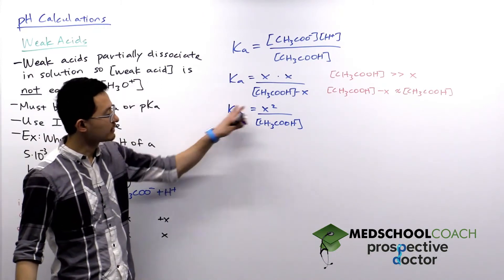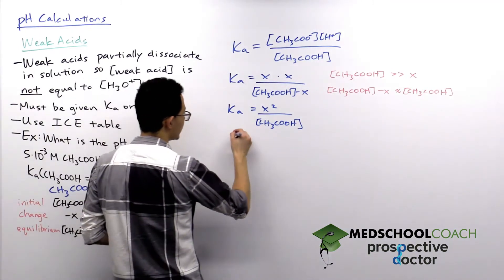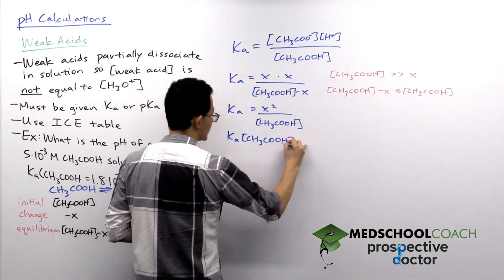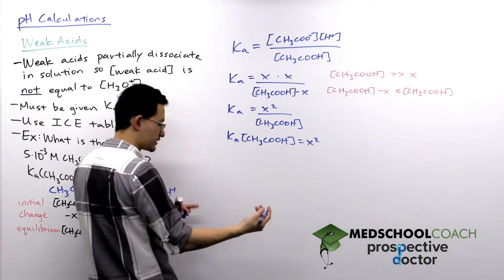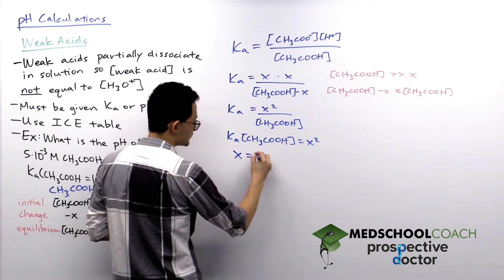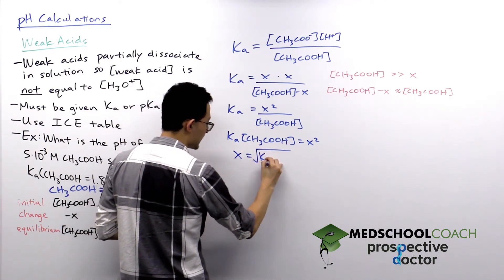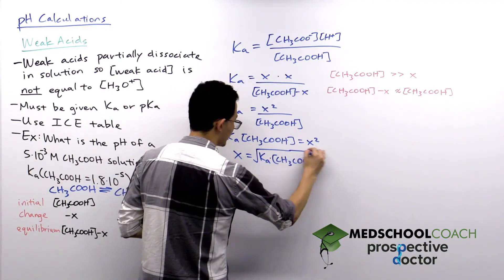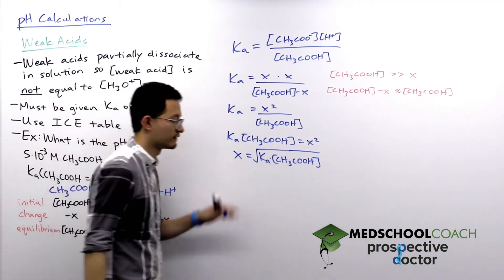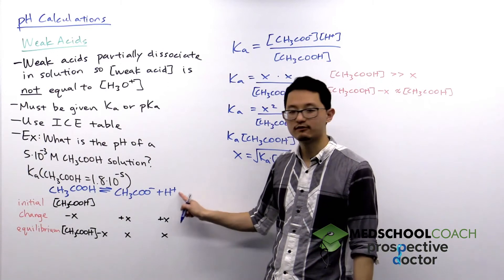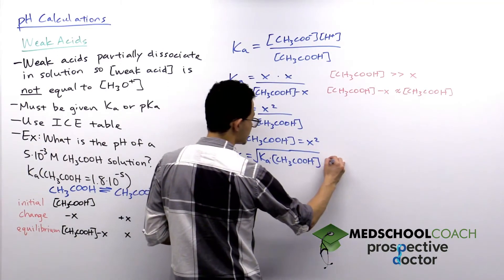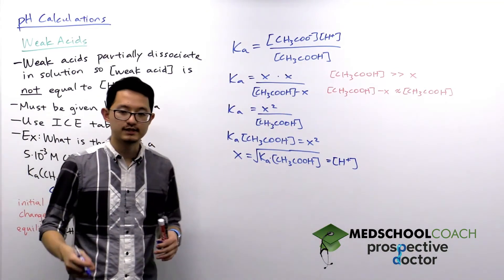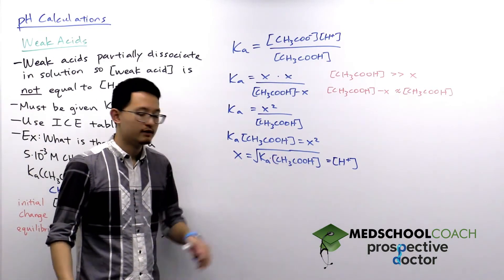We can rearrange by multiplying both sides by CH₃COOH to get Ka × [CH₃COOH] = X². Taking the square root of both sides gives X = √(Ka × [CH₃COOH]). We're isolating for X because X equals the concentration of the hydrogen ion [H⁺], and once we have that, we can take the negative log to get the pH.